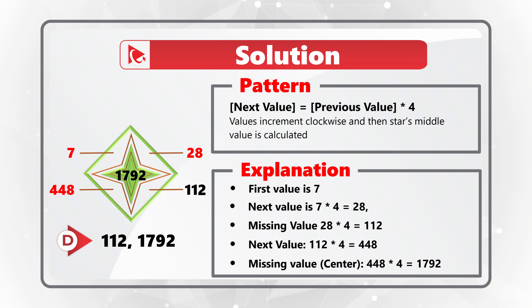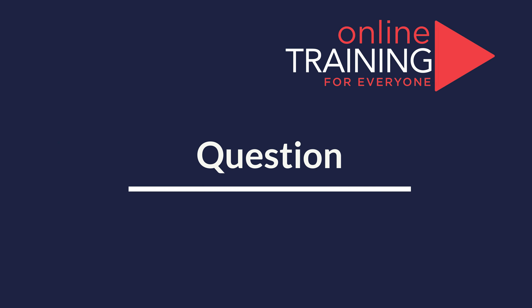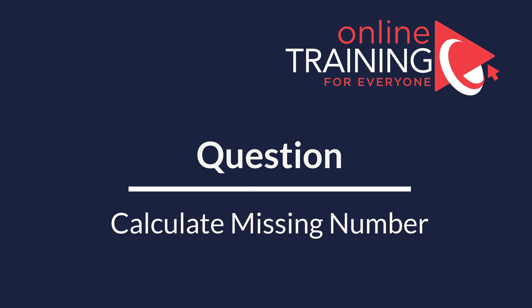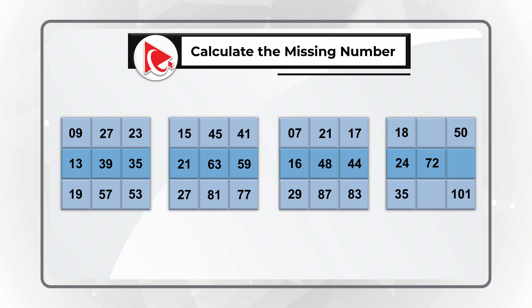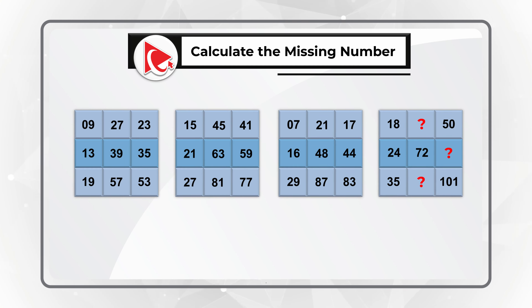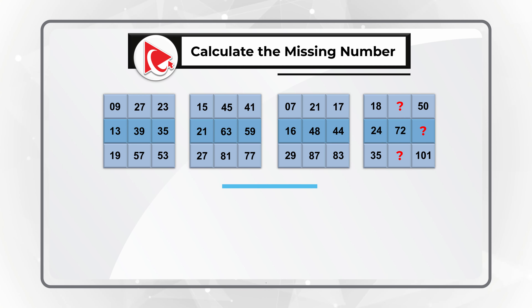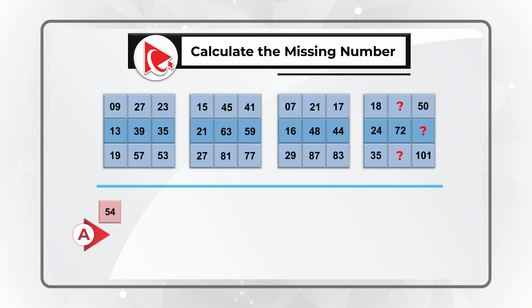Hopefully you've nailed this question. Here is an amazing question which truly tests your analytical skills. You're presented with 4 sets of 3×3 matrices. Each matrix has 9 numbers, and in matrix 4 there are 3 missing numbers that you need to calculate. Choice A: missing numbers might be 54, 68, and 105. Choice B: missing numbers might be 55, 78, and 97.